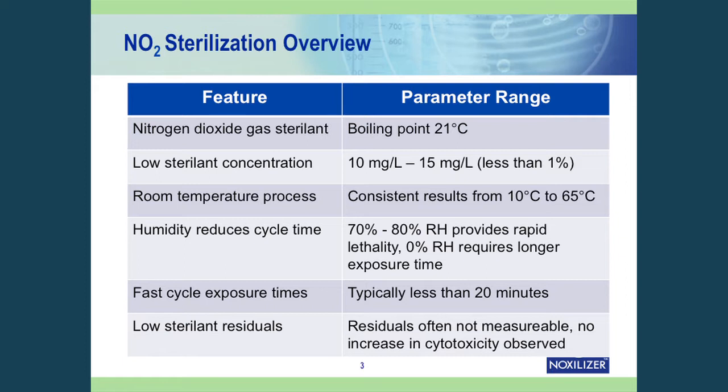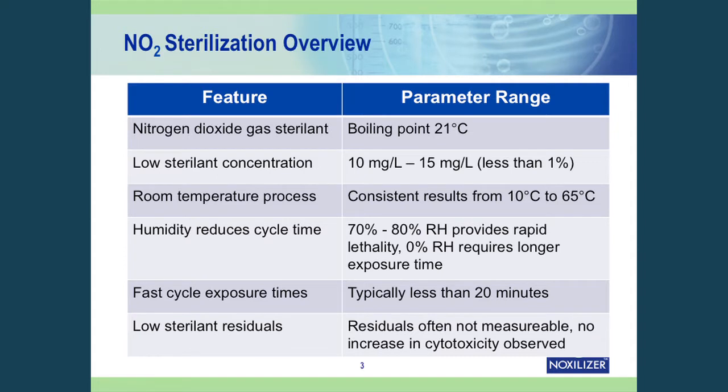Humidity, however, is an important factor. You can have a much faster process if you have humidity. Typically, we'll use 70 to 80% relative humidity inside the chamber during the exposure process. However, if the materials being processed are sensitive to humidity — if they're electronic components that might corrode, or if they're biodegradable and you want a zero humidity environment — that's also possible, but it does take longer.